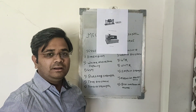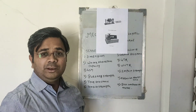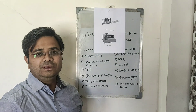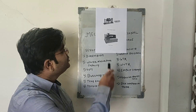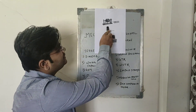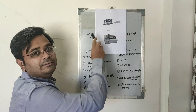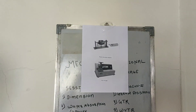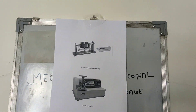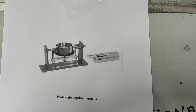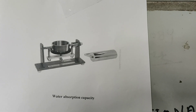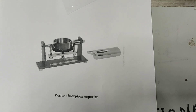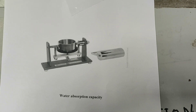The water absorption capacity of any packaging material can be determined with the help of an instrument. Water absorption capacity is generally performed for paper and paperboards using the COBB apparatus.